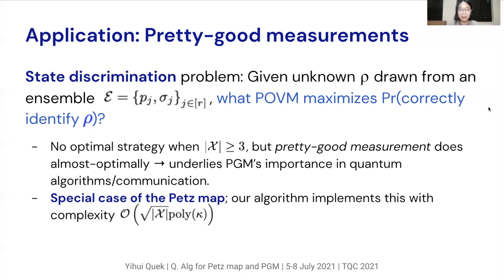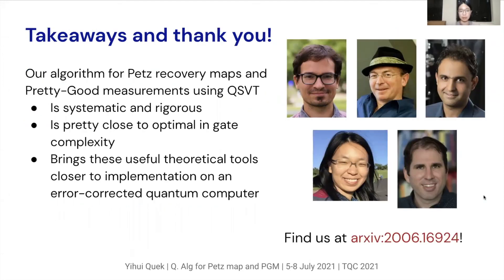To conclude with the takeaways: we have an algorithm for implementing the PETS recovery map and pretty good measurements, using the recently developed toolbox of the quantum singular value transform. The algorithm is systematic and rigorous, implementing a really complicated expression very cleanly and precisely. Our algorithm is also close to optimal in gate complexity, and we hope it will bring these useful theoretical tools closer to implementation on an error-corrected quantum computer. Our paper is available on the archive, and I'd be happy to take any questions. Thank you for your attention.